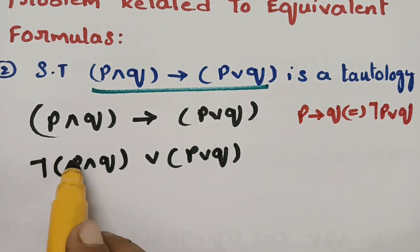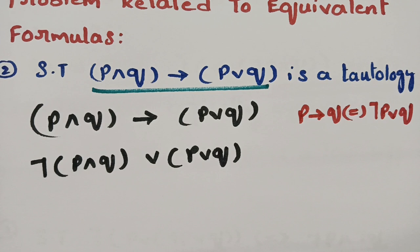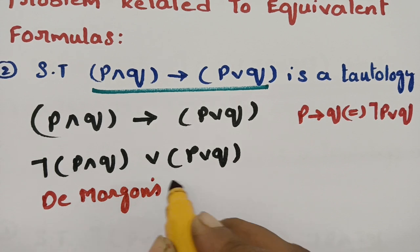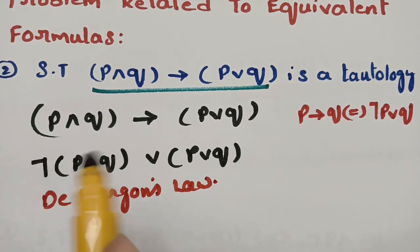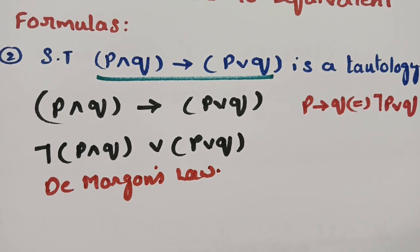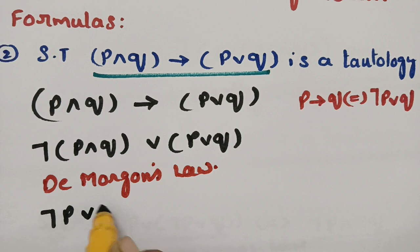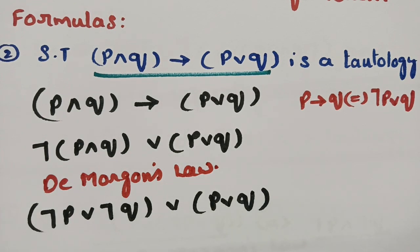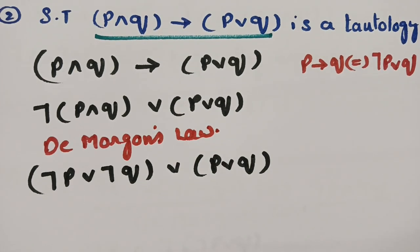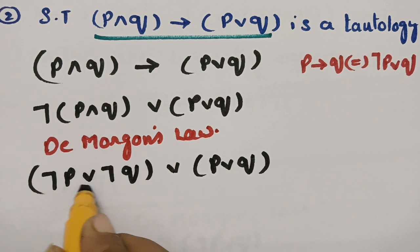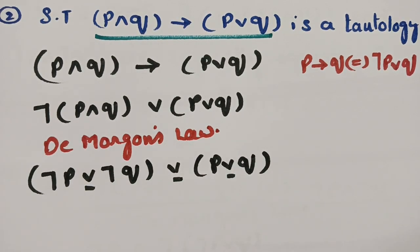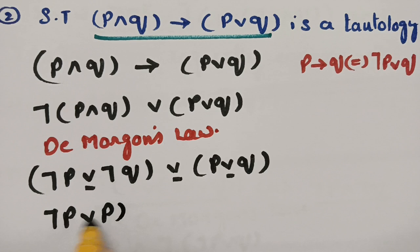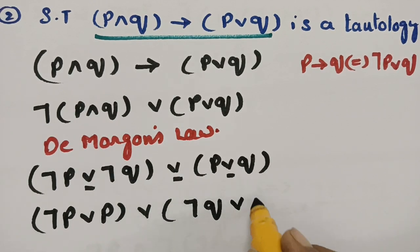Next, applying De Morgan's law: sending the negation inside the 'and' turns it into 'or', giving: negation P or negation Q or P or Q. Since these are all joined by 'or', I can interchange them using the commutative law, rearranging to: (negation P or P) or (negation Q or Q).